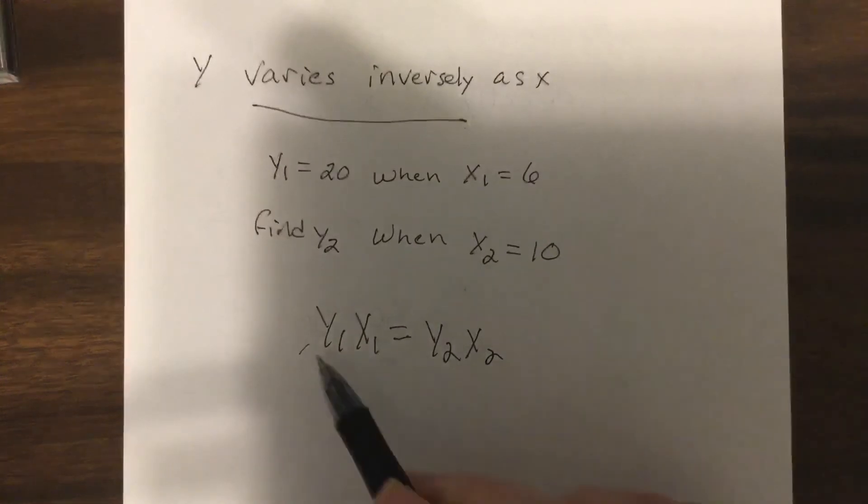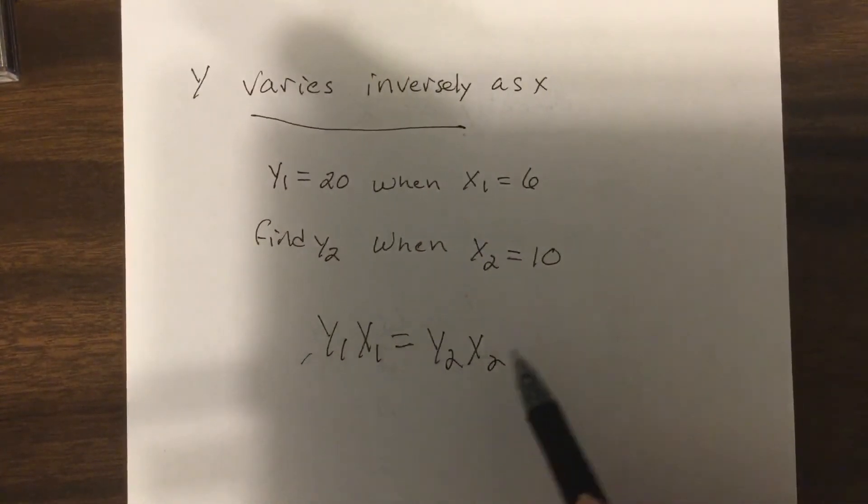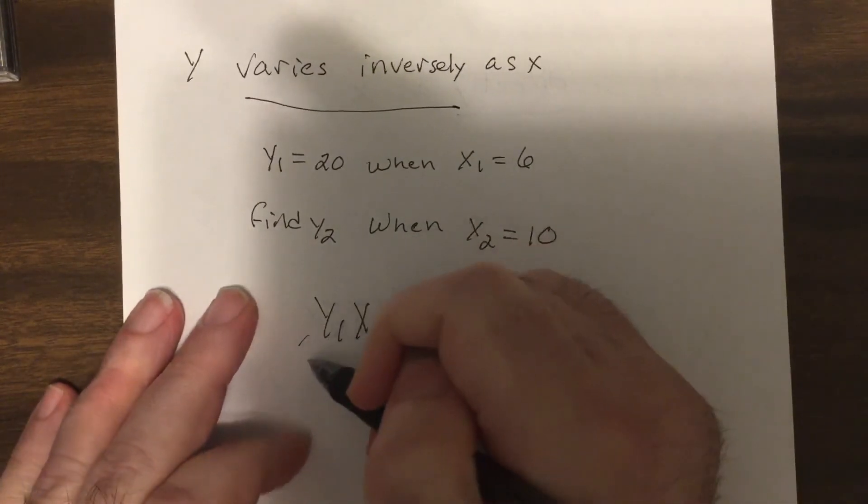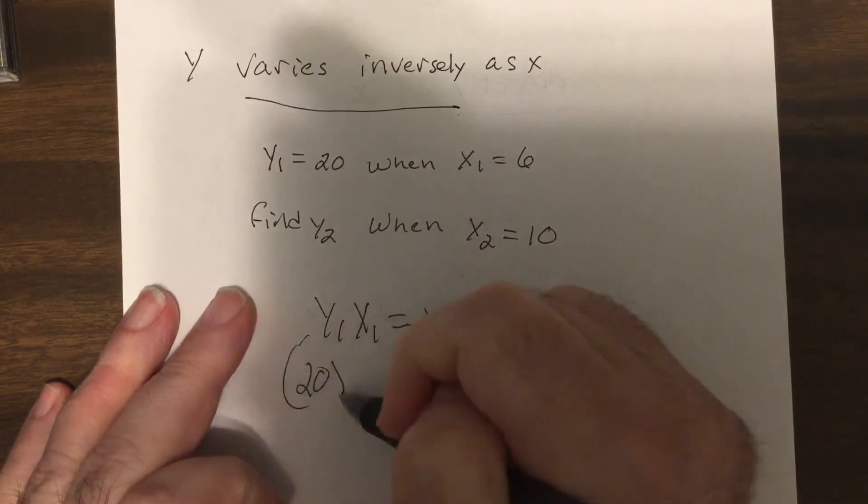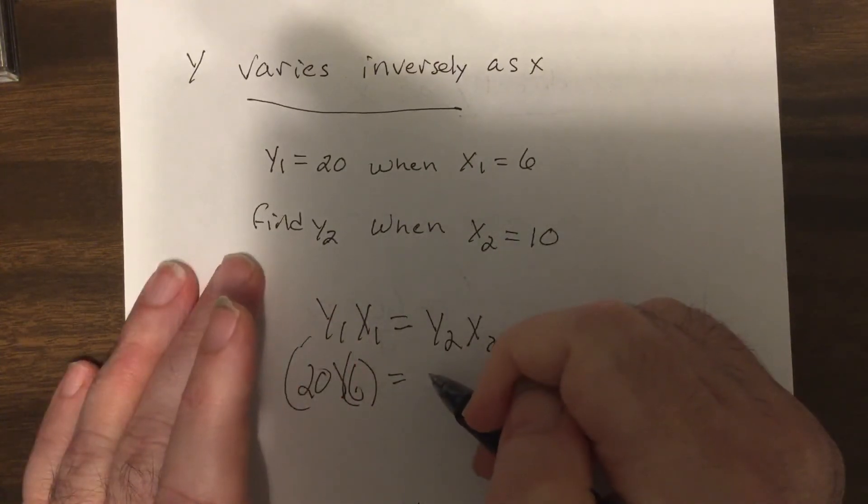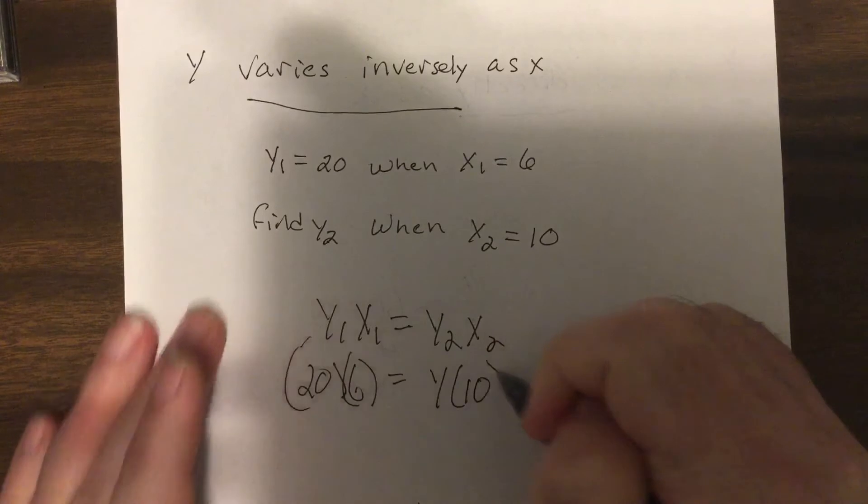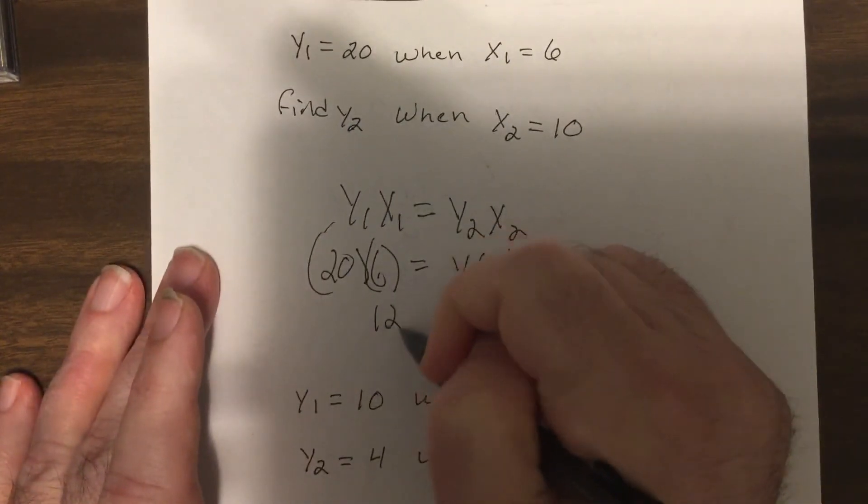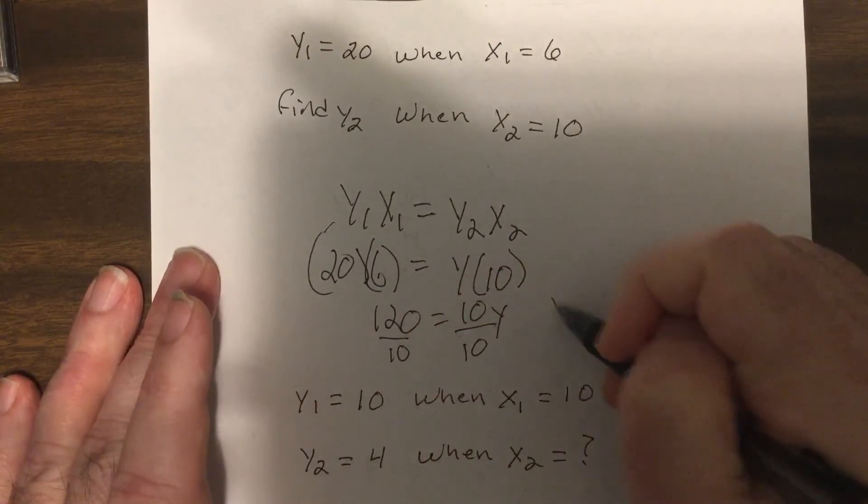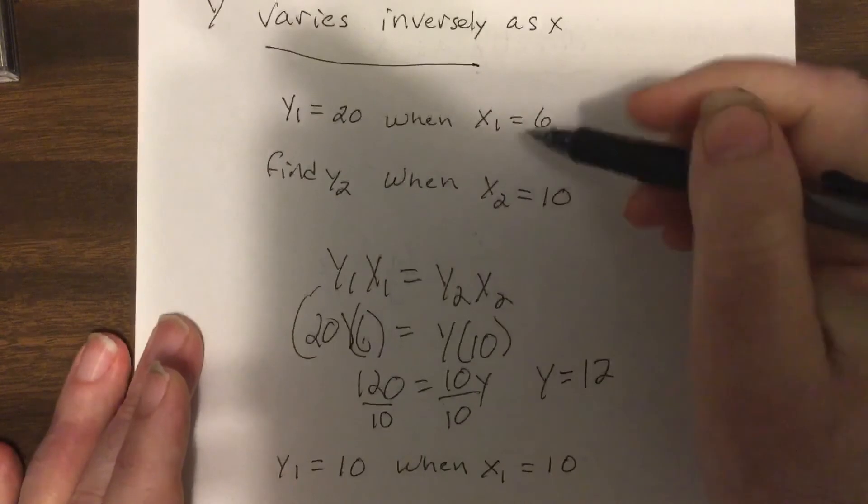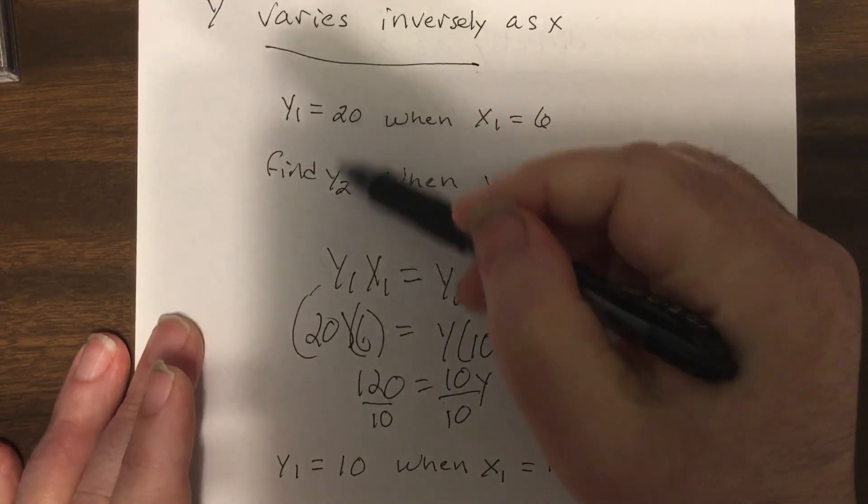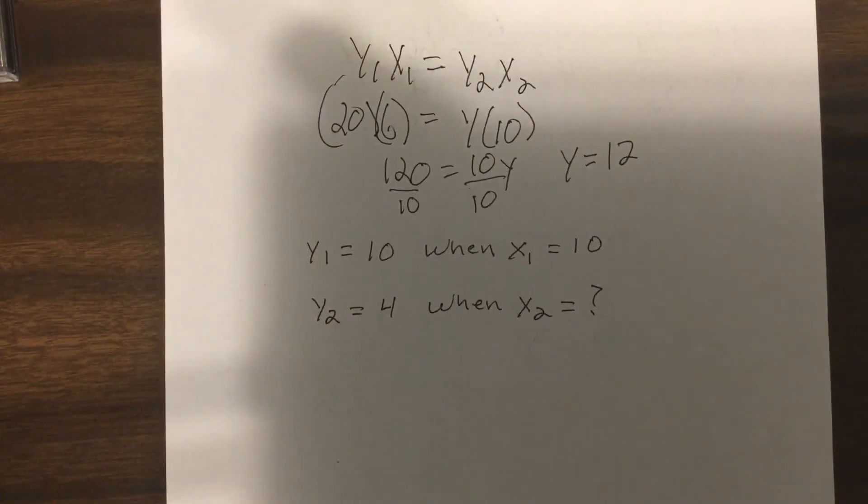Here I go: 20 times 6 equals y times 10, so I'd have 120 equals 10y, divide by 10, y equals 12. Notice x got bigger, 6 to 10, y got smaller, 20 to 12. So try that one on your own.